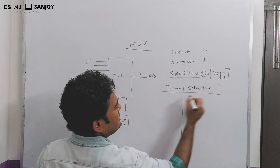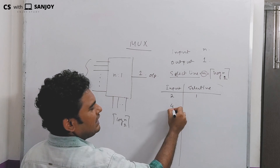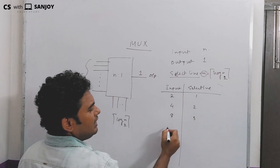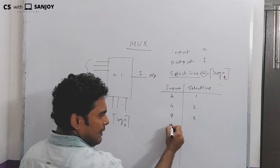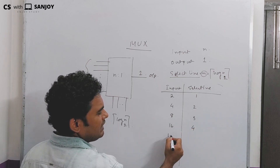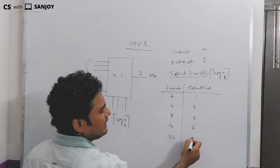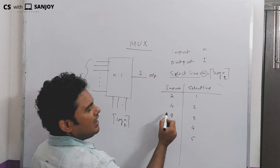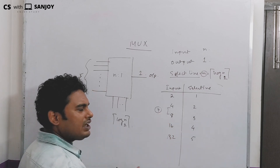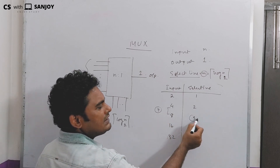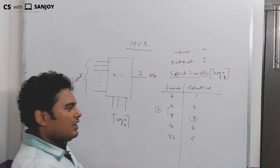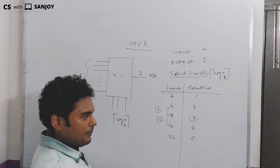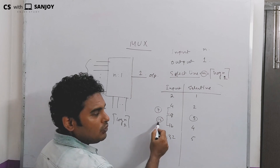For example: 2 inputs require 1 select line; 4 inputs require 2 select lines (since 2^2=4); 8 inputs require 3 select lines (since 2^3=8); 16 inputs require 4 select lines; and 32 inputs require 5 select lines.